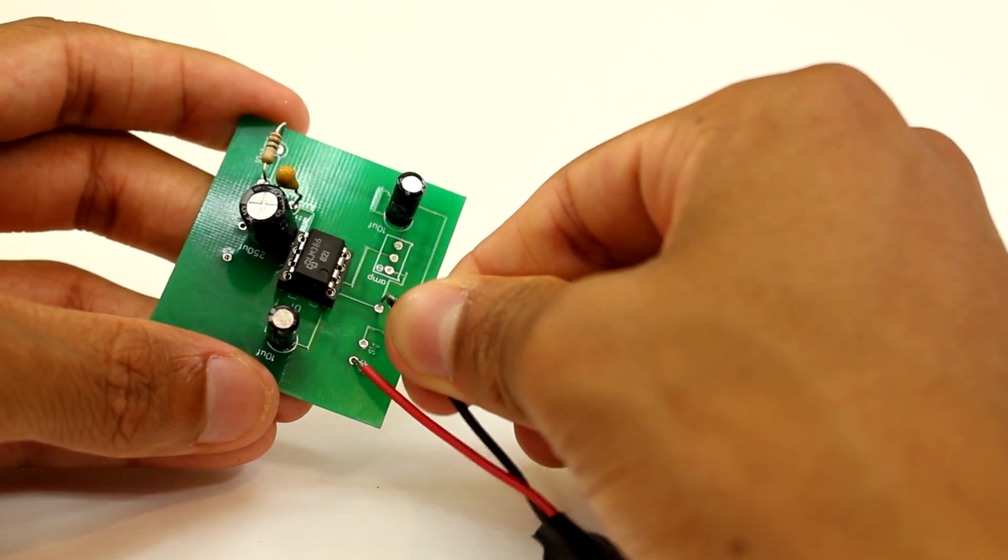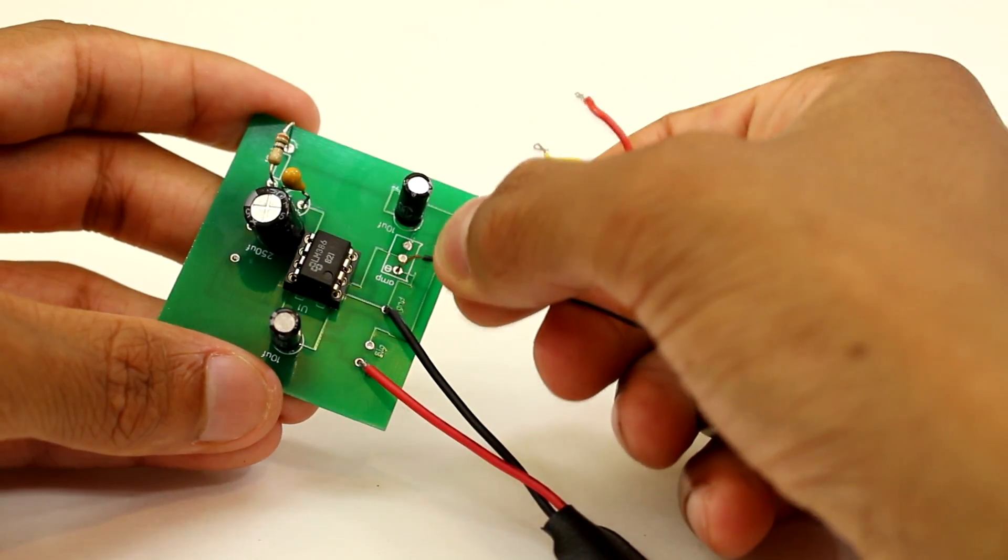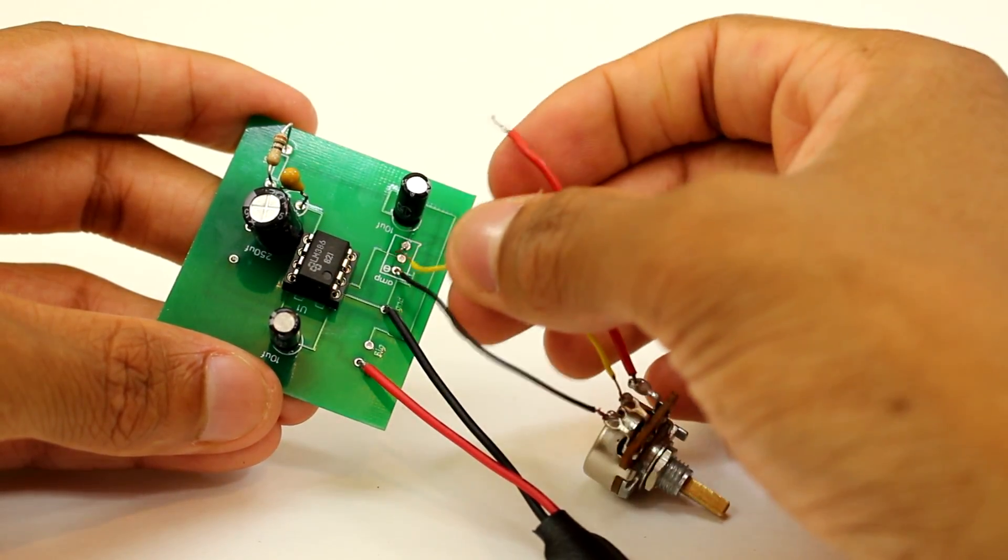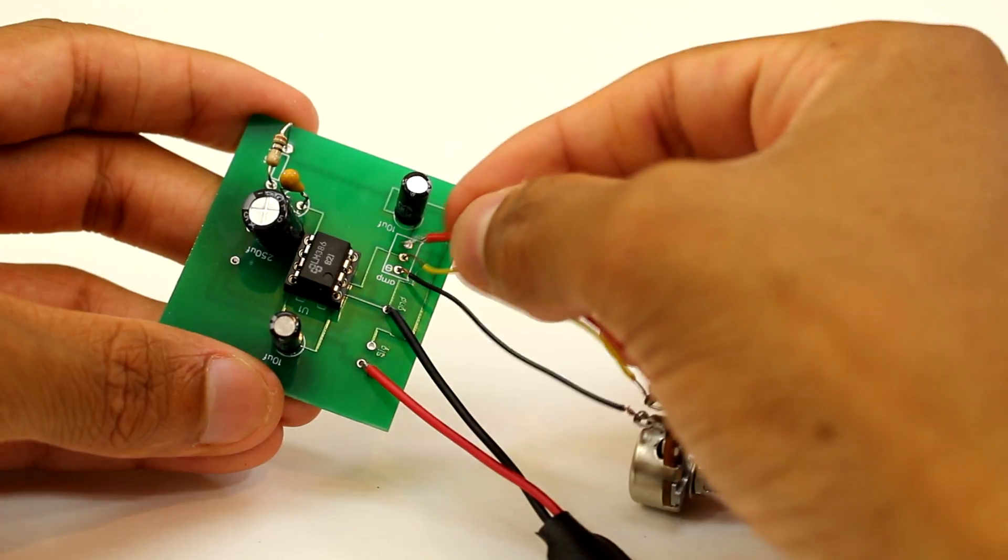Next we have to attach our battery clip and our potentiometer, aka variable resistor, and the variable resistor will basically be a volume control for these speakers.